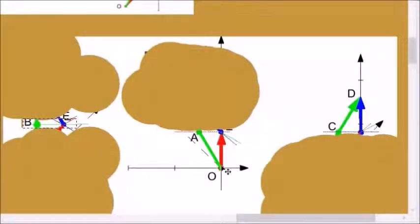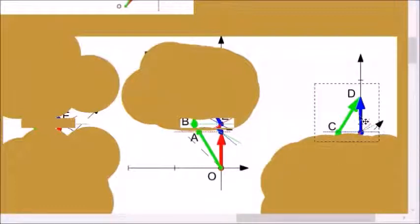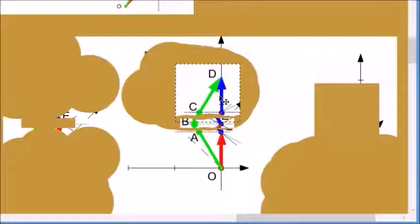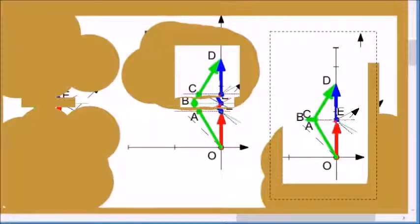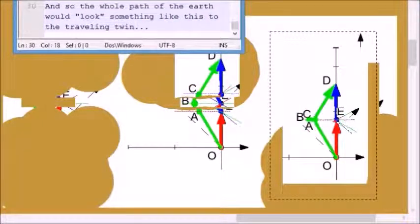So while the earth is moving away from the traveling twin, it will move out to its Lorentz contracted distance to point event A. Then during the acceleration, the earth will pop out to its full uncontracted distance, and then the earth will pop back to its contracted distance. And so the whole path of the earth would look something like this to the traveling twin.